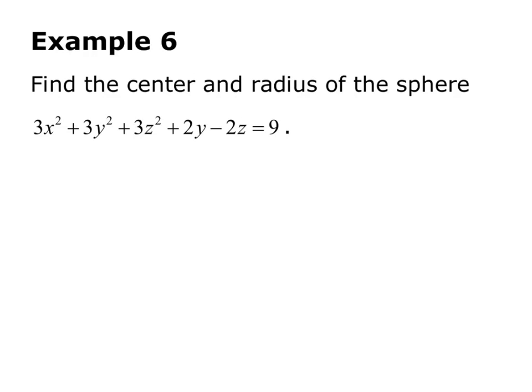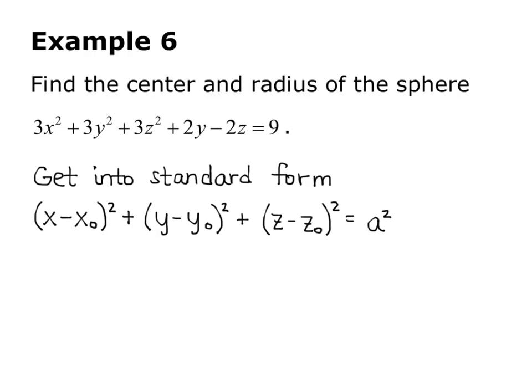Example 6 from the notes: find the center and radius of the sphere 3X² + 3Y² + 3Z² + 2Y − 2Z = 9. We want to get this into standard form — (X − a)² + (Y − b)² + (Z − c)² = A² — so that we can identify the center and radius. To do this, we will have to complete the square.